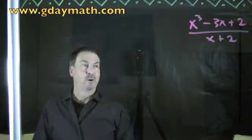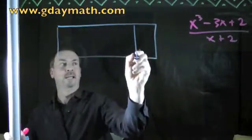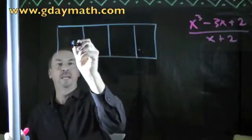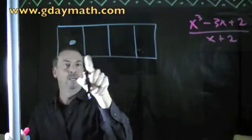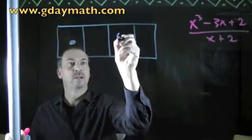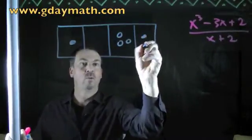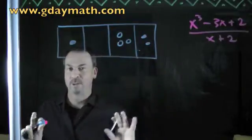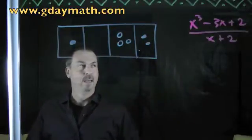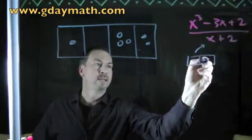Well, that's not too bad. I mean, let me just draw the boxes for it. Something like this. I've got 1x cubed, I've got no x squareds, and what we're looking for divided by x plus 2, what does x plus 2 look like? 1x and 2 ones.